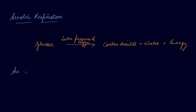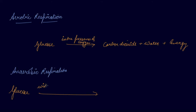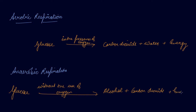In anaerobic respiration, you break down glucose without the presence of oxygen. So glucose, without the use of oxygen, is converted into alcohol plus carbon dioxide plus energy. Our muscle cells can also respire anaerobically, but only for a short period of time when there is a temporary deficiency of oxygen.